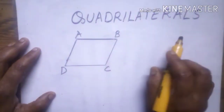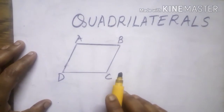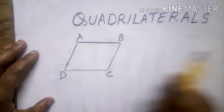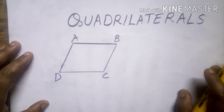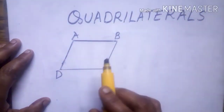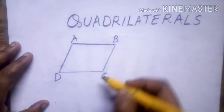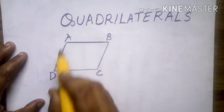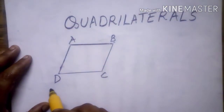Next is quadrilaterals. Polygons which are made up of four line segments are called quadrilaterals. Before this topic, we learned about triangles — a polygon made of three line segments. Quadrilaterals are made of four line segments. The four sides are A-B, B-C, C-D, and D-A. It has four corners — A, B, C, D — which are the vertices.